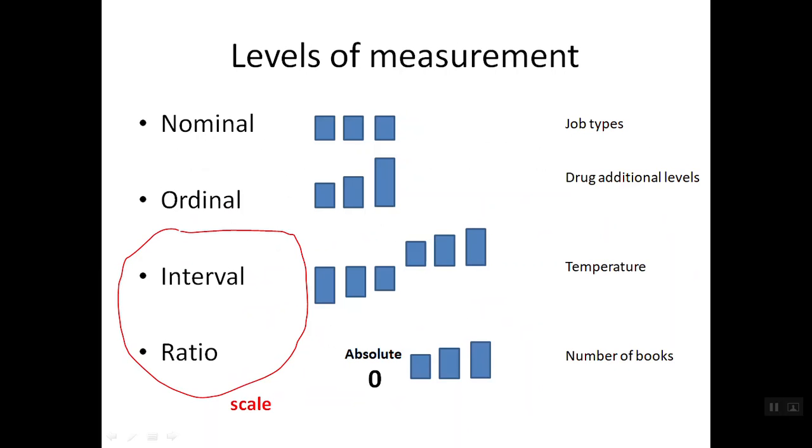I use this explanation photo to further explain the difference between these four different levels of measurement for you. Nominal variable, they carry the meaning of names or labels. One such example is job types. The job of marketing and the job of research doesn't carry weight. They are equal.